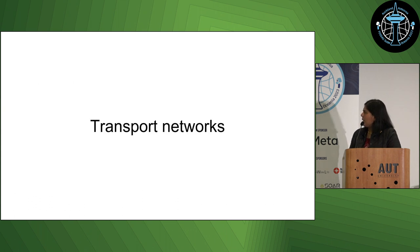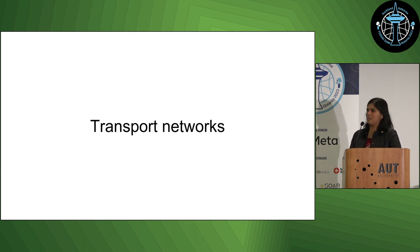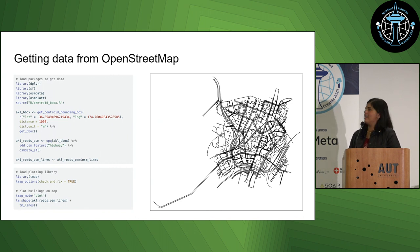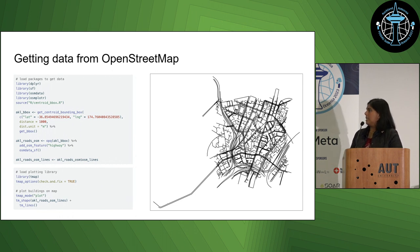And this is probably the bit I spend the most amount of time on — not just because I work at the Ministry of Transport, but it's something I'm really interested in because I walk a lot and really enjoy cycling. Once again, like with cafes, it's really easy to get data on transport networks from OpenStreetMap, whether you're interested in cycleways, the road network, or public transport.